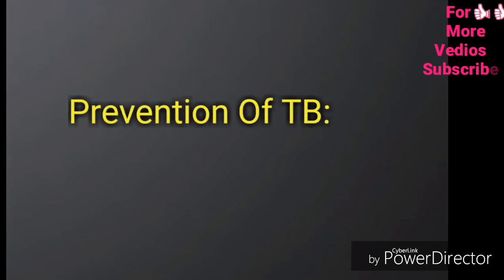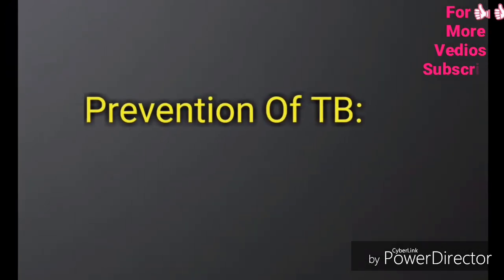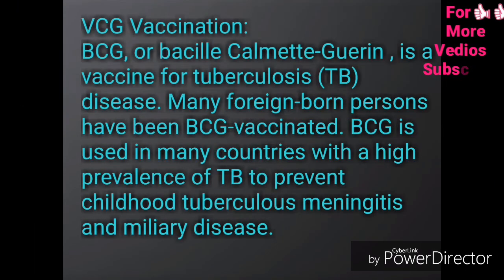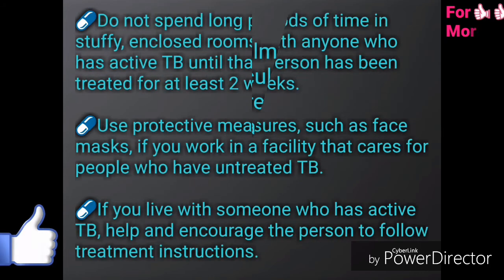Prevention of tuberculosis. BCG, or Bacillus Calmette-Guérin, is a vaccine for tuberculosis disease. Many foreign-born persons have been BCG vaccinated. BCG is used in many countries with a high prevalence of TB to prevent childhood tuberculosis and meningitis. Don't spend long periods of time in stuffy and closed rooms with anyone who has active TB until that person has been treated for at least two weeks. Use protective measures such as face masks.